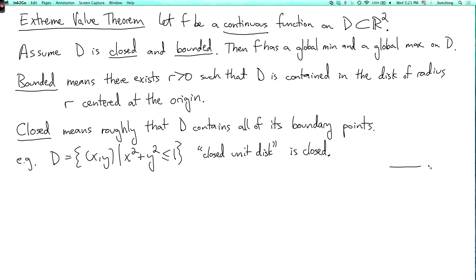Why? Well, if we look at the picture, so the boundary of the closed unit disk is the unit circle, where x squared plus y squared is equal to 1, and the unit circle is contained in D because we're allowing less than or equal here.